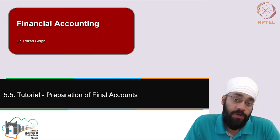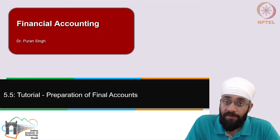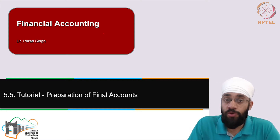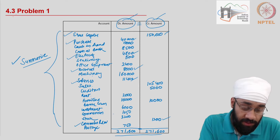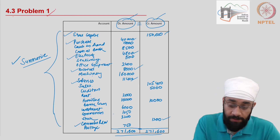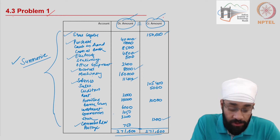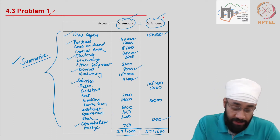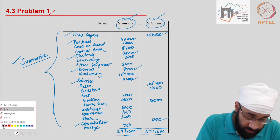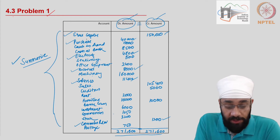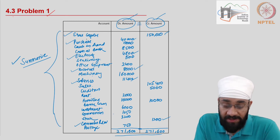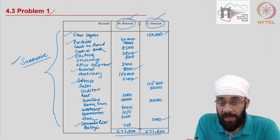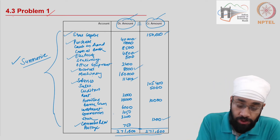This is a tutorial where we are going to learn to prepare the final accounts — balance sheet and income statement — using the trial balance from the previous videos. In video 4.3 we had a problem where we prepared our trial balance. I'm going to use that trial balance to prepare the profit and loss account and balance sheet. I'll look at each item in the trial balance and mark it as asset, liability, income, or expense, then post it to the correct place.